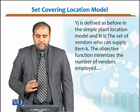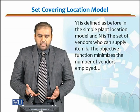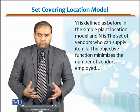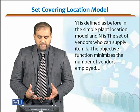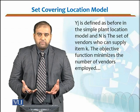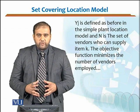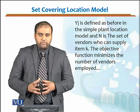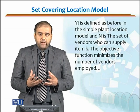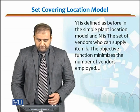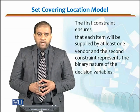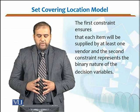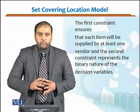yj is defined as before in the simple plant location model, and n is the set of vendors. If you have a pool of vendors, we identify who can supply item k. The objective function thus minimizes the number of vendors employed.